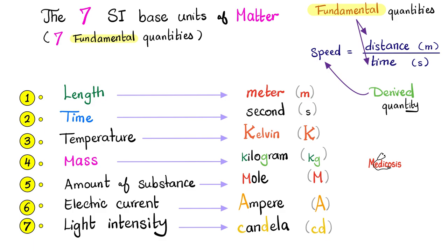Do you remember the seven standard international base units? They are: length measured in meters, time in seconds, temperature in kelvins, mass in kilograms, amount of substance in moles. Pay attention — in chemistry, mass is measured in grams because we work in the lab with chemical samples. But in physics, the standard unit for mass is kilogram, not gram. The magnitude of electric current is in amperes and light intensity is in candela.